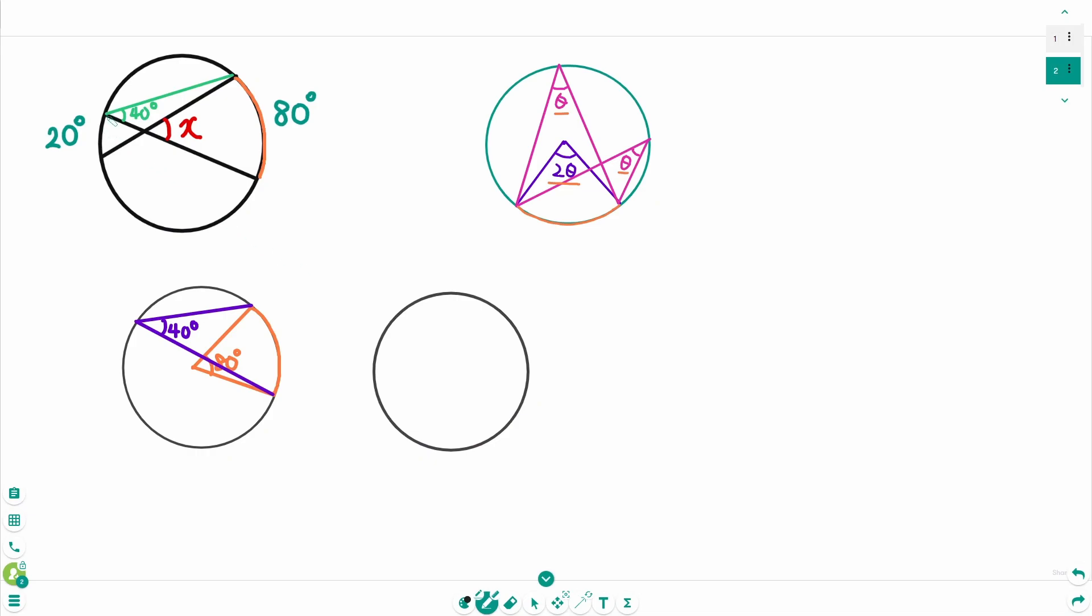Use the same technique subtended by this arc. The central angle is 20 degrees. That means the central angle is 20 degrees, so the inscribed angle is 10 degrees. That means this angle is 10 degrees.